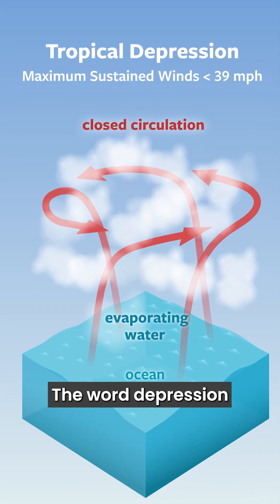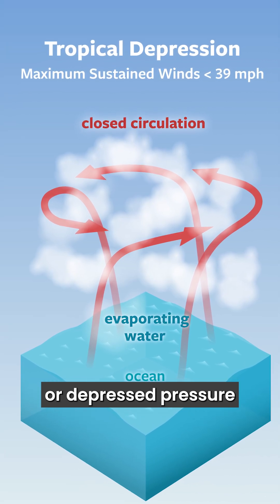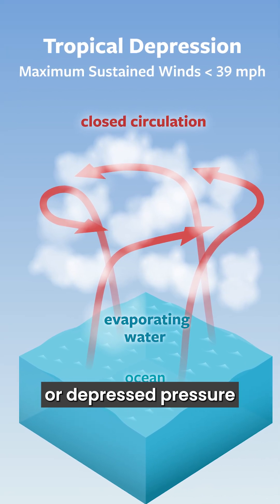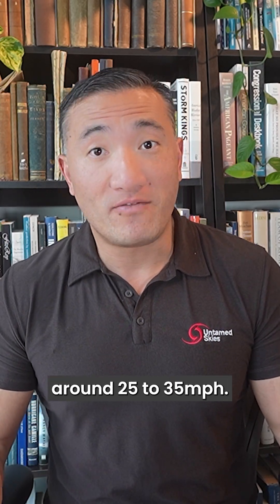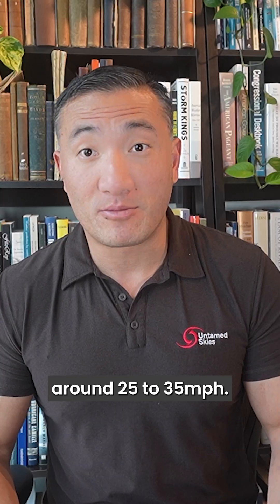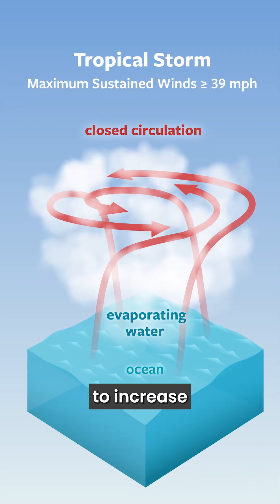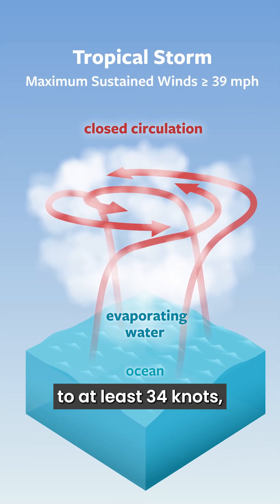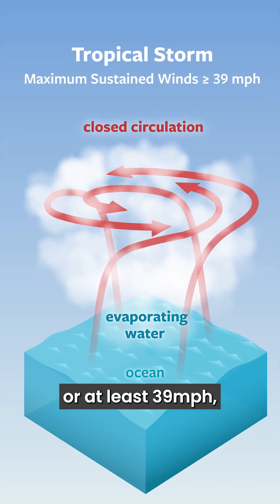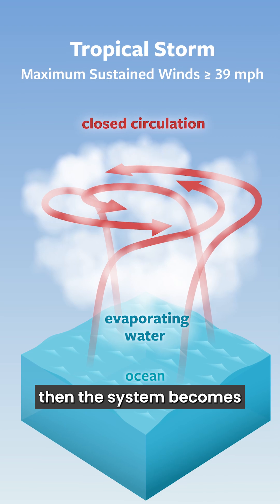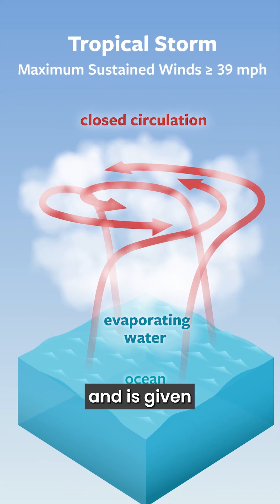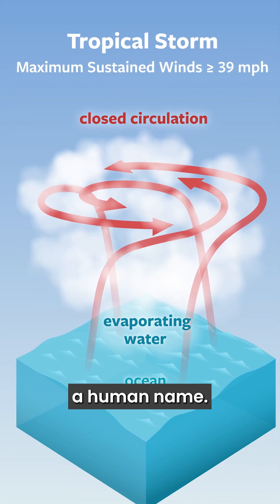The word depression refers to the lower or depressed pressure inside the cluster of thunderstorms. Typically, tropical depressions have maximum sustained winds around 25 to 35 miles per hour. If winds start to increase to at least 34 knots, or at least 39 miles per hour, then the system becomes a tropical storm and is given a human name.